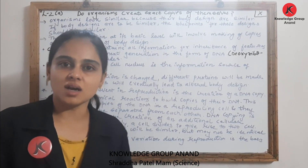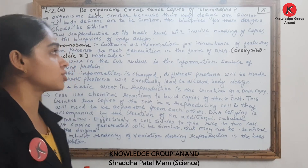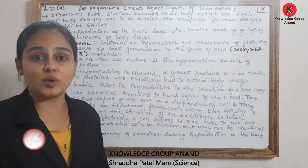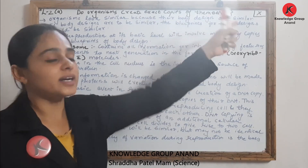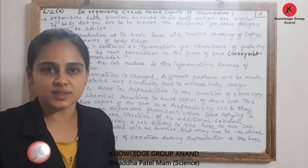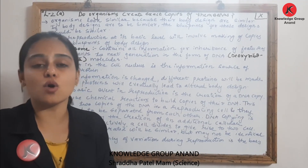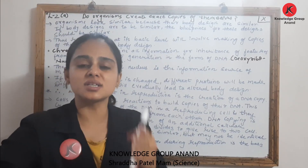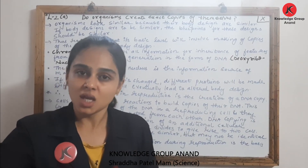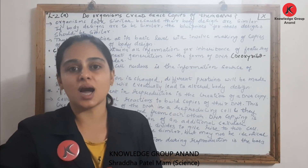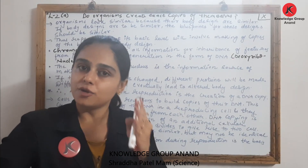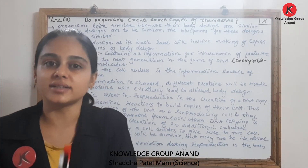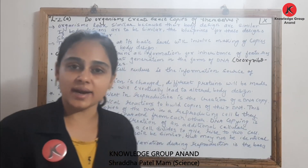Dear students, let us discuss the second topic of your chapter on reproduction: do organisms create exact copies of themselves? Ask this question yourself. What will be your answer? The answer will be yes, they make copies of themselves but not exact ones. Otherwise, we would look identical to our parents. Even though the features we have are similar to our parents, we look like our mum and dad but not exact, not identical. We need to understand this theory in detail.